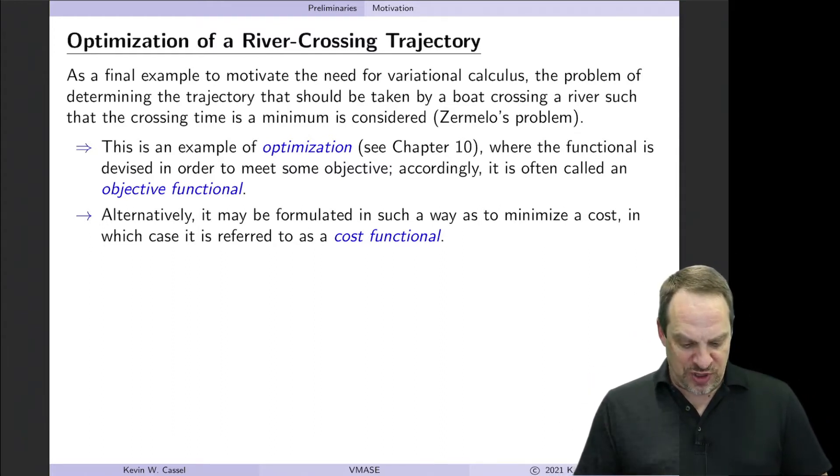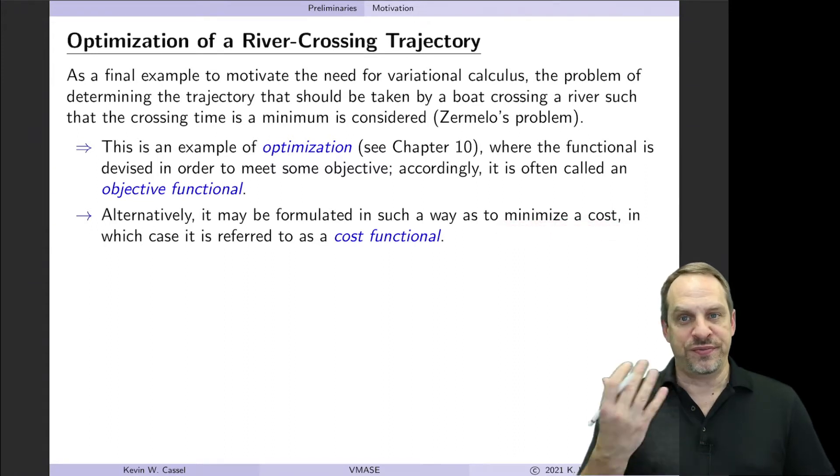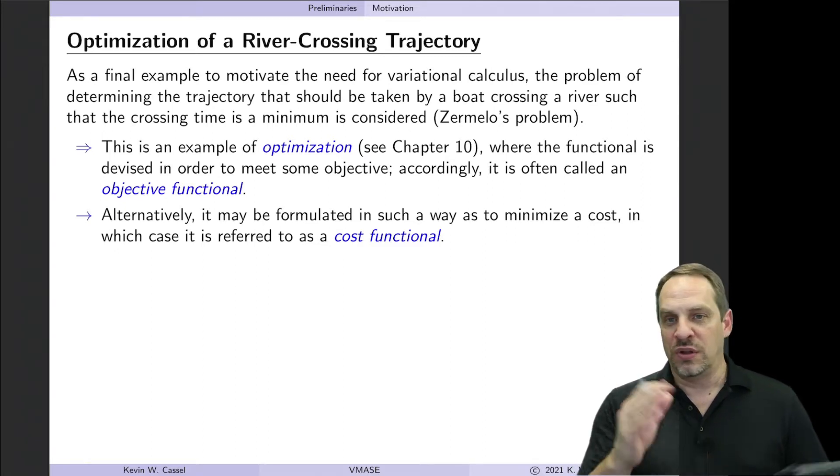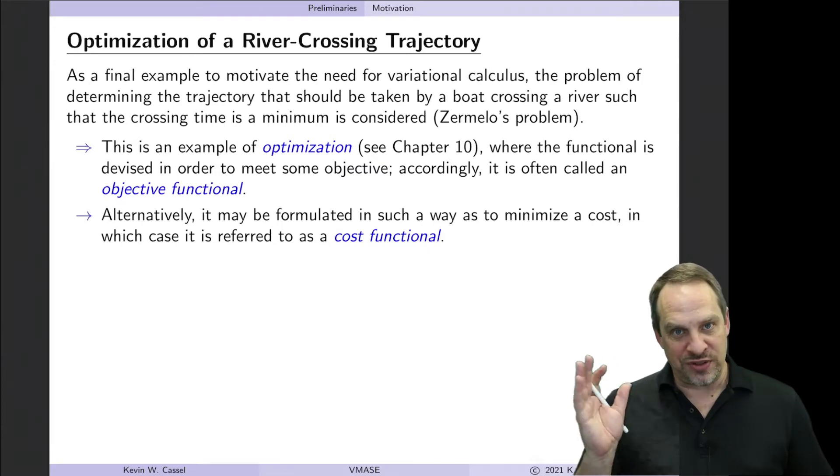Now in some cases, you might want to, for example, minimize the cost of developing a product or manufacturing a product or whatever the case might be. So in that case, we would call it a cost functional. So as I like to say, if you're an optimist, you call it an objective functional. If you're a pessimist, you call it a cost functional. All you can ever think about is money, right? So it's a cost functional.